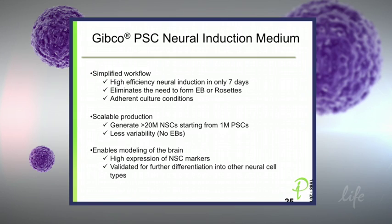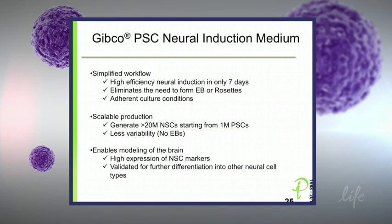The neural induction media is really greatly simplifying the workflow — nobody in my lab wants to use the embryoid body method anymore because this is a lot easier. We have a high efficiency of neural induction in only seven days, and it really eliminates the need for embryoid bodies and rosette picking, all in adherent culture conditions. It's very scalable: you can start with a million cells and end up with more than 20 million cells that you can bank. It also enables really modeling the brain, with high expression of the expected neural stem cell markers, and we've shown we can differentiate those cells into neuronal and glial types.